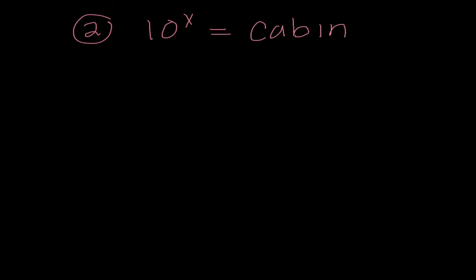Number two, 10 to the X power equals cabin. By the way, there is a note handout if you didn't open that up. Let's try and isolate this X. And let's change forms. This would be log base 10 of cabin equals X. Oh, it's not a great math joke. So log cabin equals X.